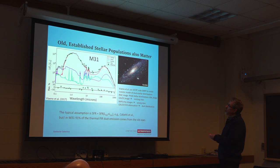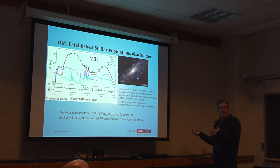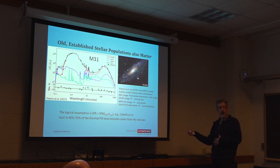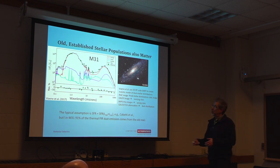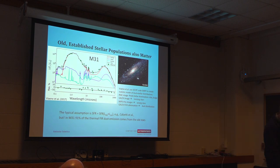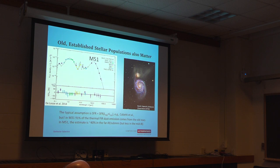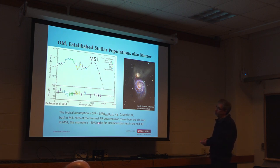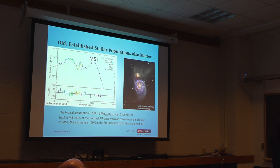The evolved stars from the bulge and the disk generate the bulk of the heating of the dust — a somewhat surprising conclusion. Before Spitzer launched, it was not conventional wisdom at all that old stars could contribute to the thermal far-IR heating of the dust. There's another case where we see the same thing: 40% of the heating in the thermal far-IR comes from established stellar populations. So you can't just read out the thermal far-IR and assume it's due to star formation — it can be AGN, or it can be from the old stars.